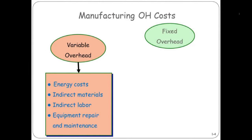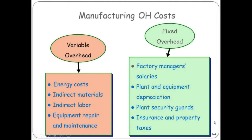Going back to the first week, reminding ourselves that overhead has variable components and fixed components. Variable components could be energy costs — they're based upon how much you're producing, so how much you're using your machinery. Some indirect labor and materials: you'll maybe need more supervisors if you have a second or third shift. So it varies with production levels.